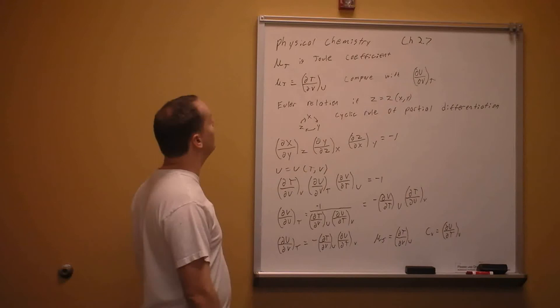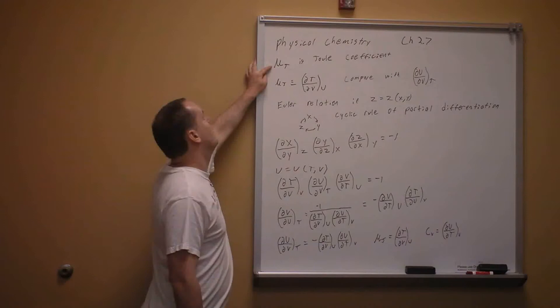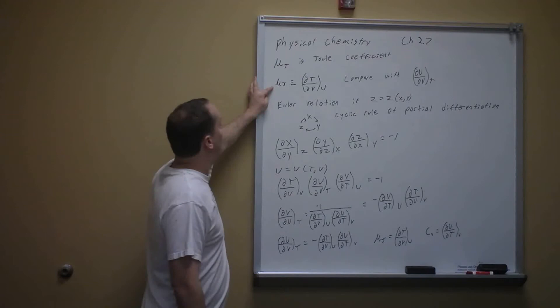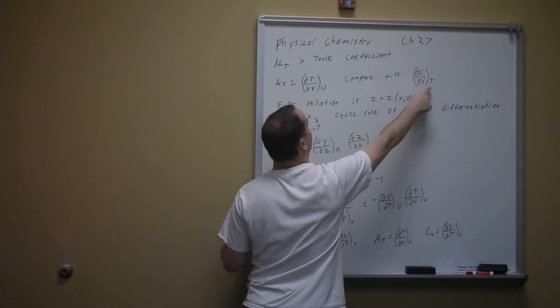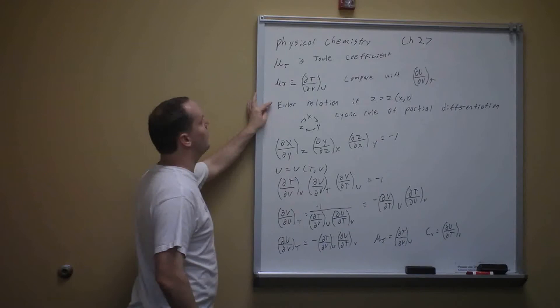Continuing Chapter 2.7, we define the Joule coefficient μJ as the derivative of temperature with respect to volume at constant internal energy. We want to relate this to dU/dV at constant T. To do this, we use the Euler cyclic relation from multivariate calculus: if z is a function of x and y, then (dx/dy)_z times (dy/dz)_x times (dz/dx)_y equals negative one.